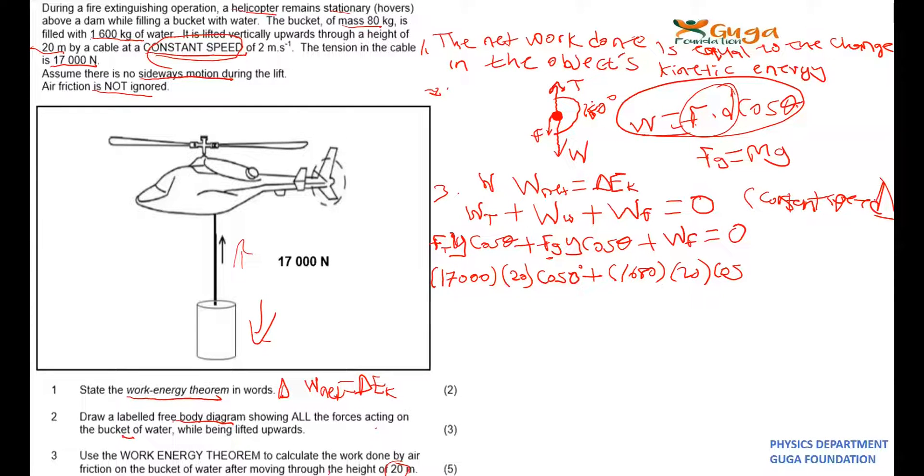So you have got an angle here of 180 degrees. It will be negative because of 180 degrees, plus work done by friction equals zero.